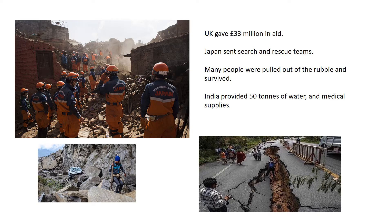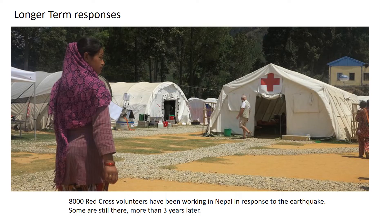The biggest challenge making short-term efforts ineffective was that it was very hard to reach the 81% of the population living in rural areas, simply because the roads were cut off and it was very hard to reach many of these people even by helicopter. In the longer term, because it took Nepal so long to start rebuilding, many people had to stay living in tents such as those set up by the Red Cross, which was still in Nepal supporting survivors more than three years later.